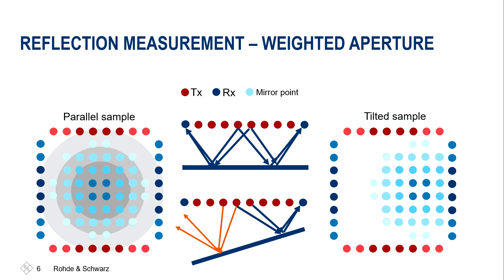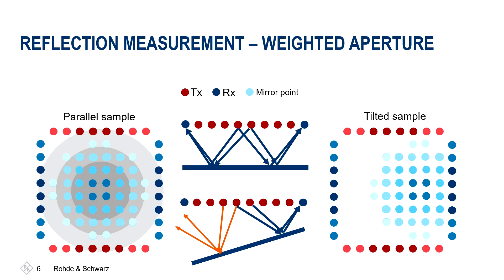In this three-dimensional example, here we have the parallel sample — you can see the bright spot is directly in the center. And with the tilted sample, you can see this bright spot has moved a little bit to the side, depending on how you tilt it: left, right, up, or down — and you can also trace that movement.